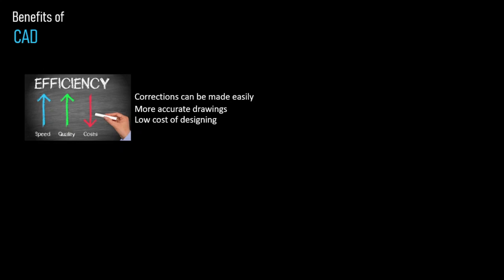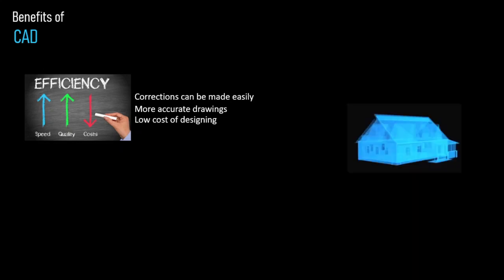First, CAD gives us efficiency. Corrections can be made easily — just edit on the computer. Compared to manual drafting, you would have to redo everything from scratch. You will also have more accurate drawings. With this speed and quality, you have a lower cost of designing — no need to reproduce the design again since it's easy to edit on a computer.